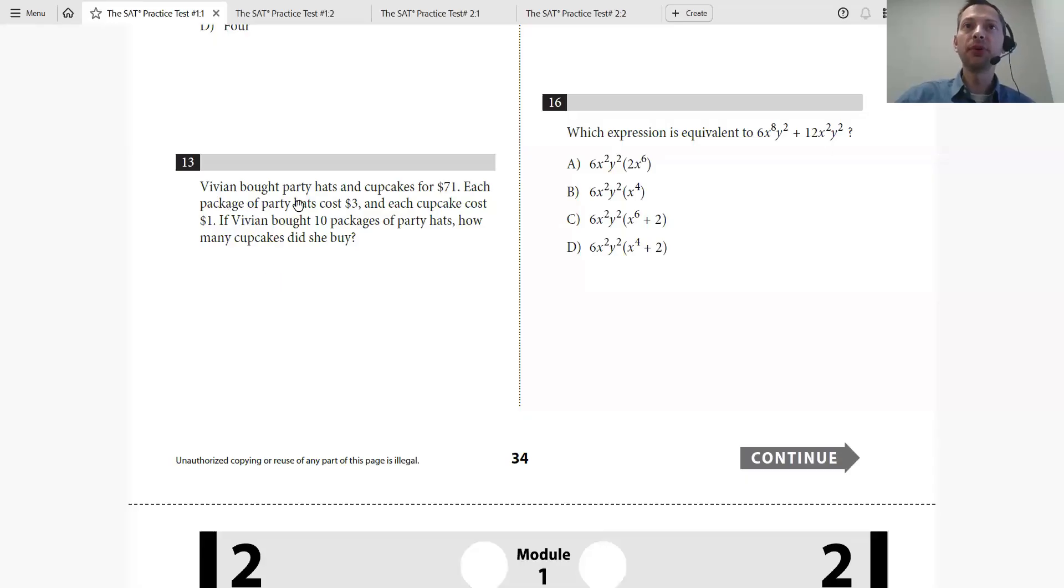If we look at this problem, number 13, Vivian bought party hats and a cupcake for $71. Each package of party hats costs $3 and each cupcake costs $1. If Vivian bought 10 packages of party hats, how many cupcakes did she buy?